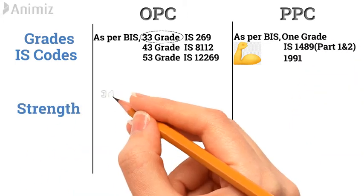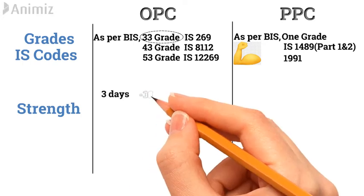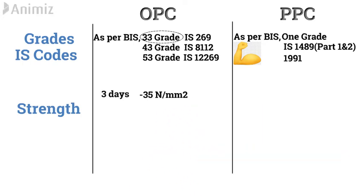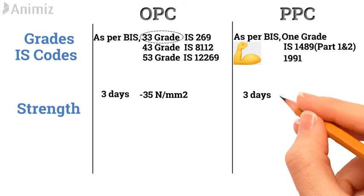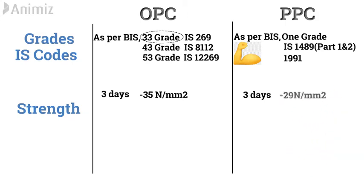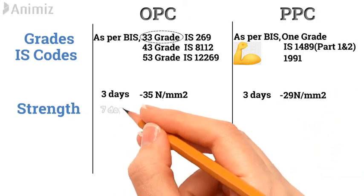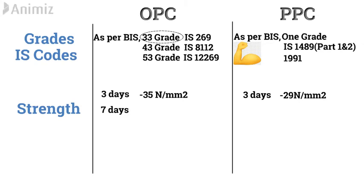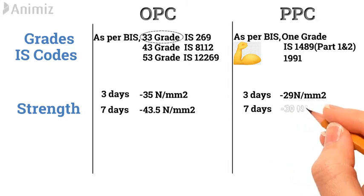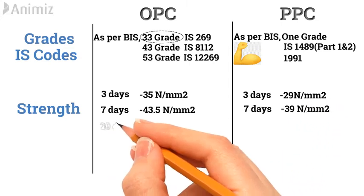Strength: In 3 days, OPC achieves a compressive strength of 35 Newton per mm square, whereas PPC achieves a compressive strength of 29 Newton per mm square. In 7 days, OPC achieves a compressive strength of 43.5 Newton per mm square, whereas PPC achieves a compressive strength of 39 Newton per mm square.